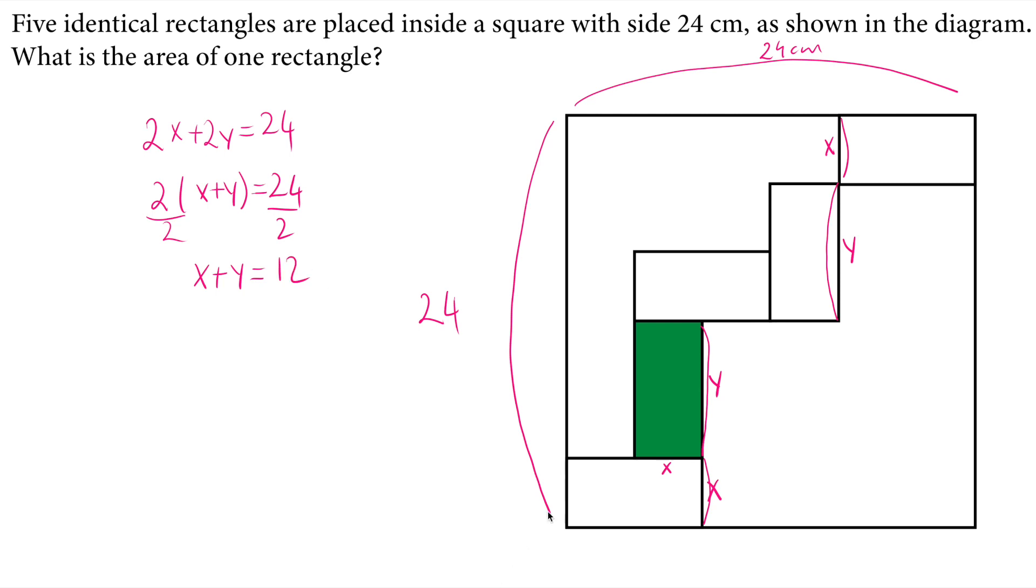So we need two equations if we want to solve two variables. So I will draw another equation using the horizontal distance. And that will be also equal to 24. We use this bottom side length. And we have y here. And this distance we don't know.